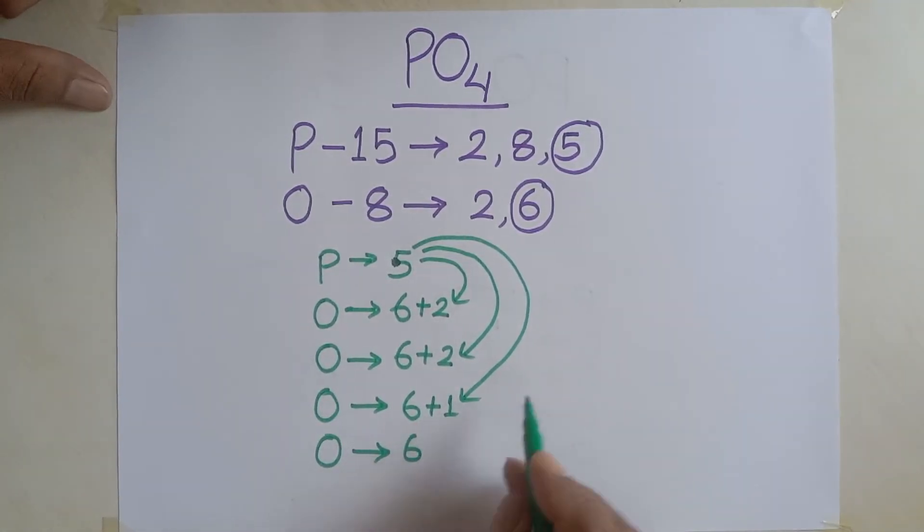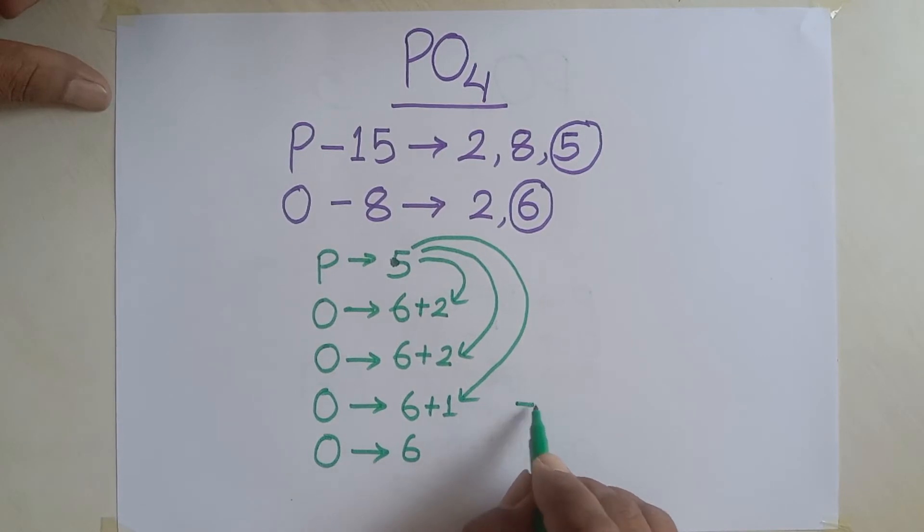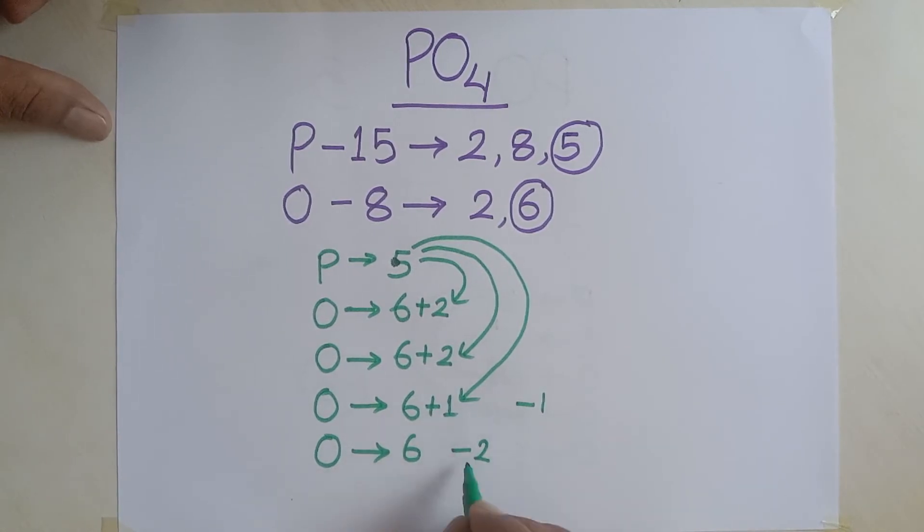But, in this case, still one electron is needed. Needed, that's why I am writing minus one. Here, also two electrons are needed to fulfill the outermost shell to form octet. Here also one, here also two.